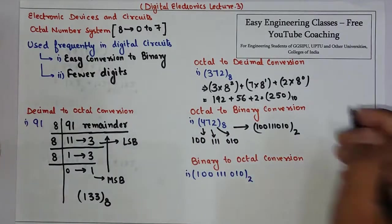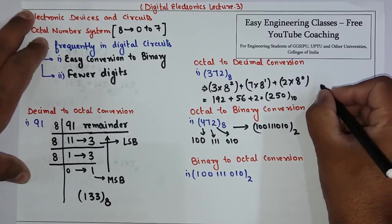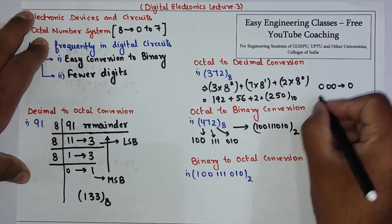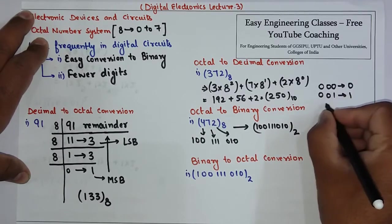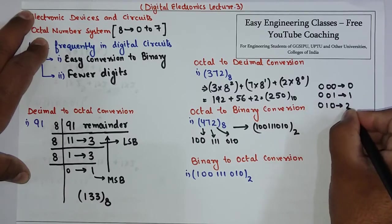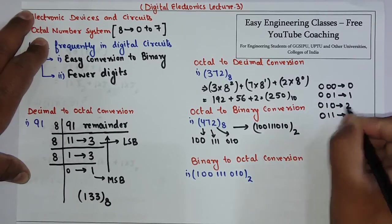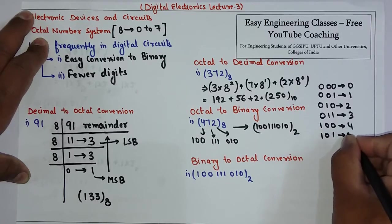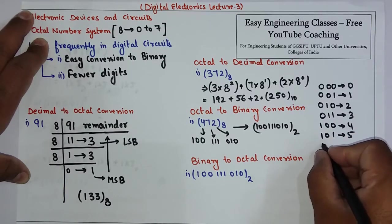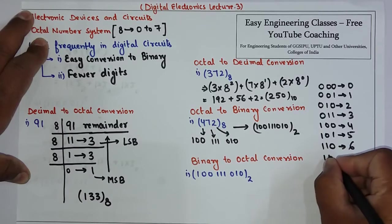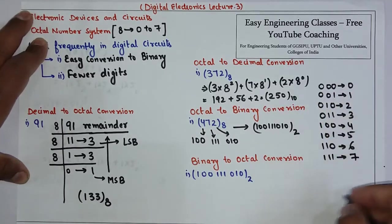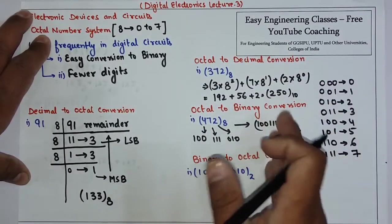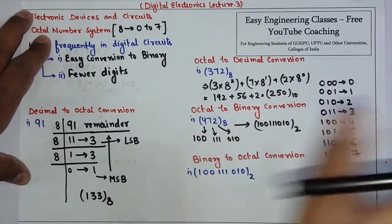Let's make the full conversion table. It is very simple: 0 0 0 represents 0, 0 0 1 represents 1, 0 1 0 represents 2, 0 1 1 represents 3, 1 0 0 represents 4, 1 0 1 represents 5, 1 1 0 represents 6, and 1 1 1 represents 7. If you remember this table, you can write the binary equivalent within seconds in an exam.